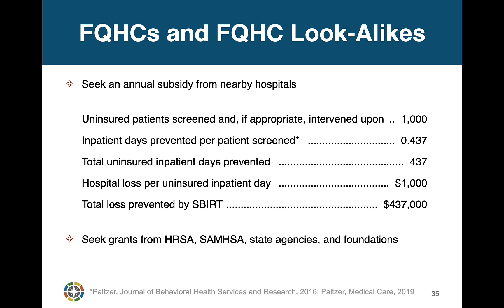For example, if your FQHC screens and, if appropriate, intervenes for 1,000 uninsured patients in a year, and if your local hospital loses $1,000 a day for uninsured admissions, your SBIRT program will save your local hospital over $400,000 per year. So perhaps you could approach your local hospital and request an annual subsidy for your SBIRT program. Until you find sustainable funding, grant funding may be an option.